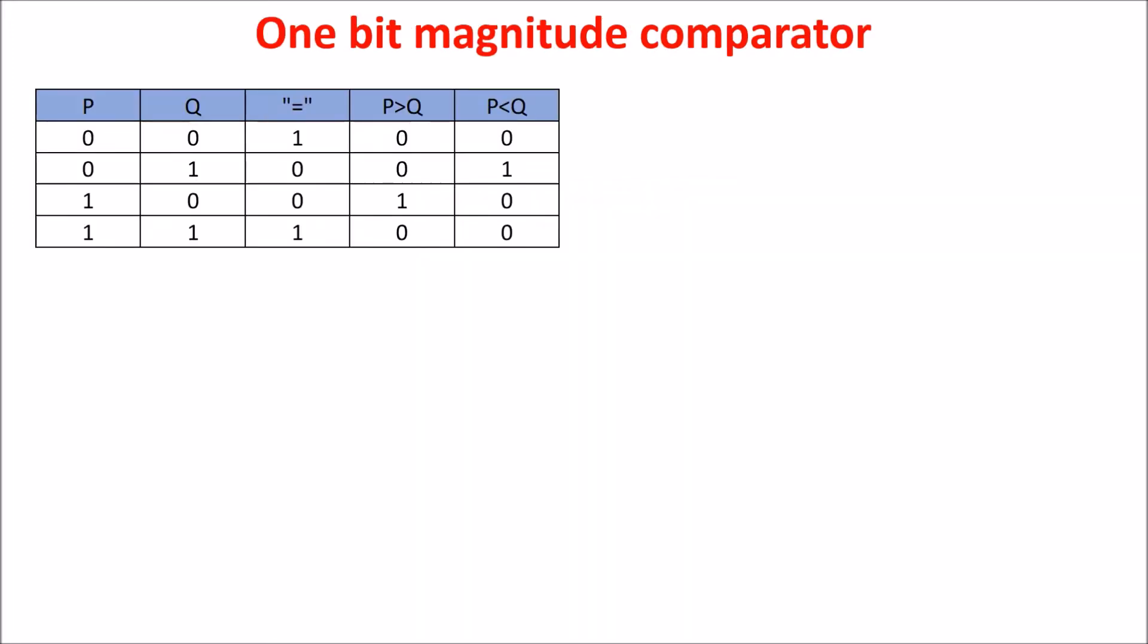For the equality we can use an XNOR gate. This is indeed the truth table of the XNOR in which we have the output at one only when the input bits are equal. We can write the relation in this way.